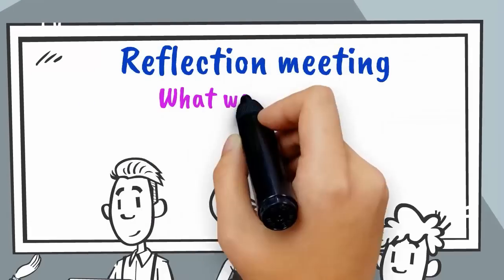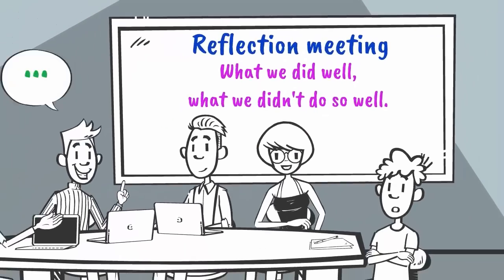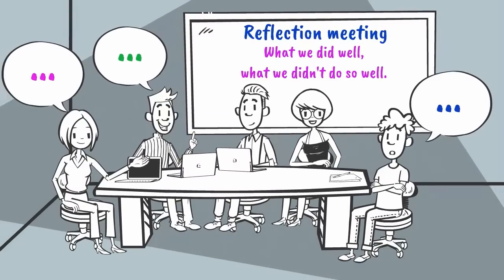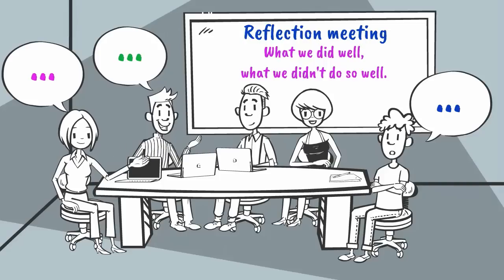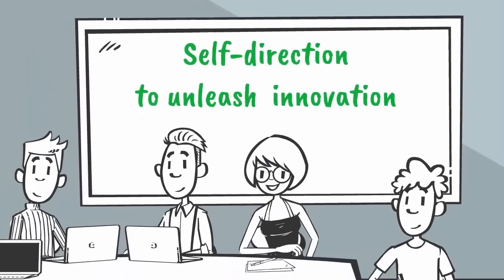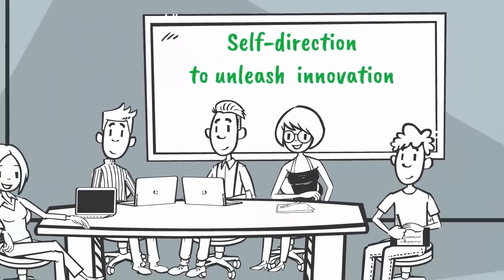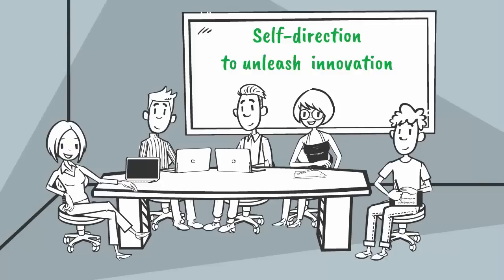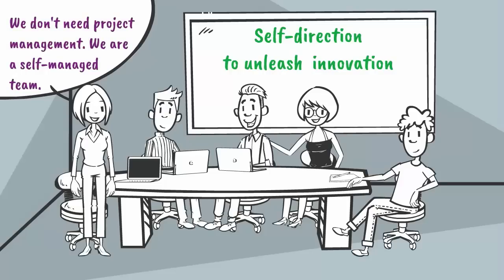At the end of each iteration, each squad team takes time to reflect about what happened. We all sit together and discuss what we did well, what we didn't do so well, and what actions should be taken for the next iteration. We encourage self-direction to unleash innovation instead of concentrating decision-making into the hands of a select few. We don't need project management — we are a self-managed team.